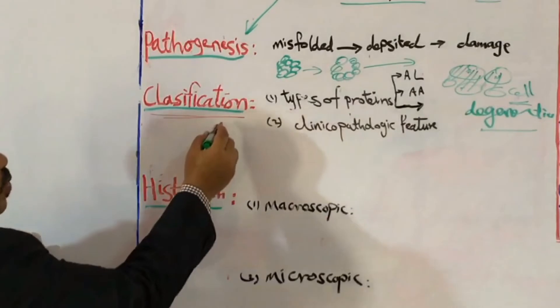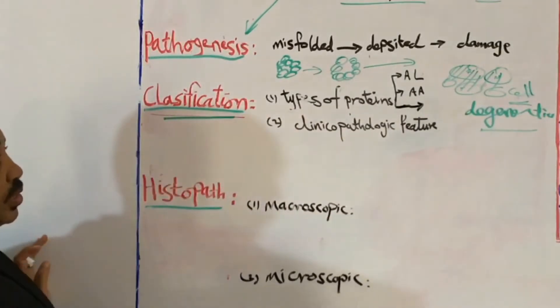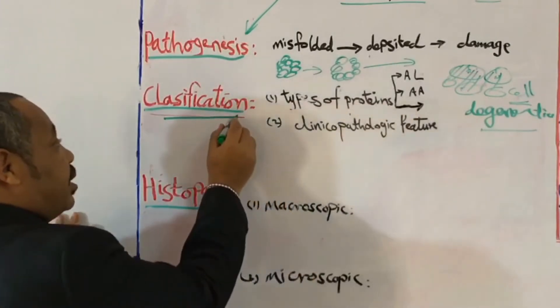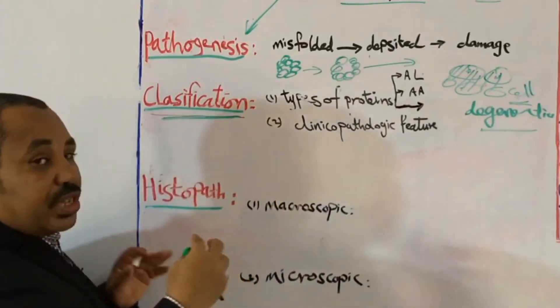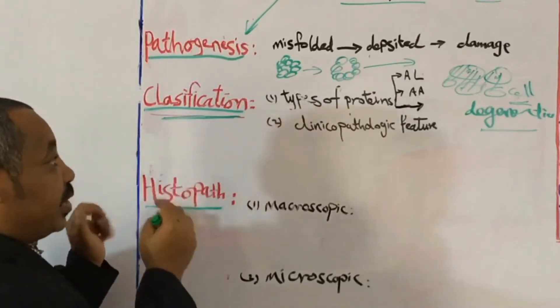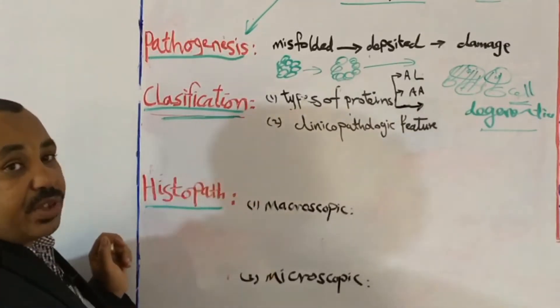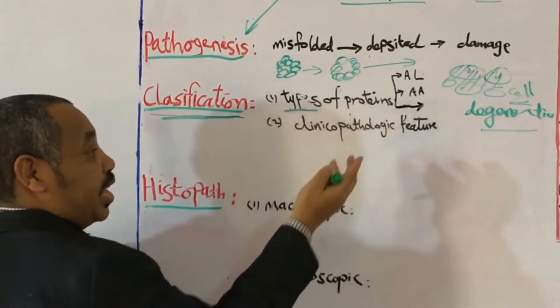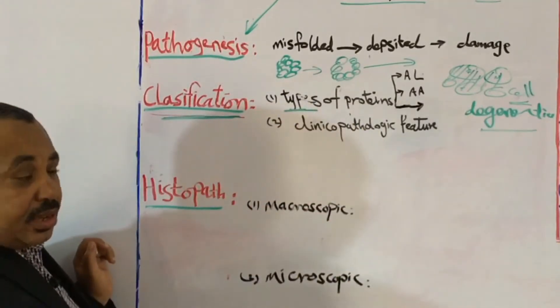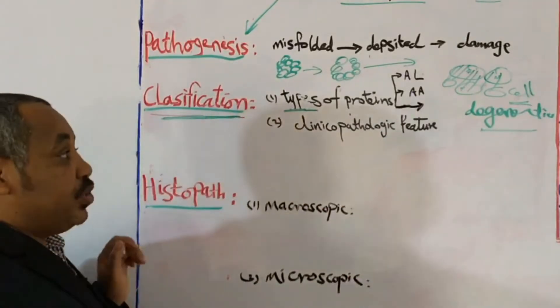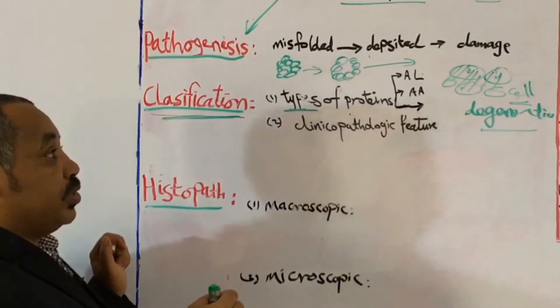So let us go over the third point, actually classification of amyloidosis. And actually I think this point is very confusing and tricky for students. So please pay more attention specifically in this point. Actually this classification depends on maybe two points. The first point, which type of protein is deposited? And the second point, what is the clinical or clinicopathological feature of this type of amyloidosis?